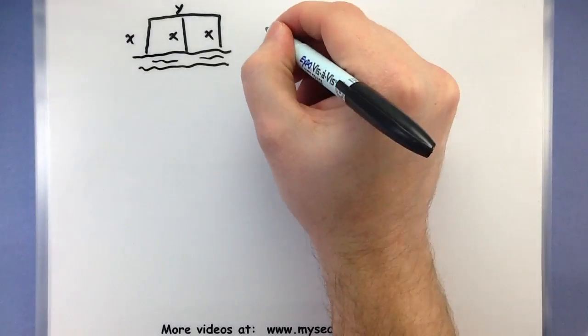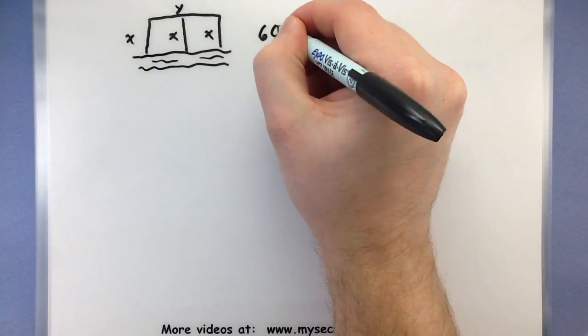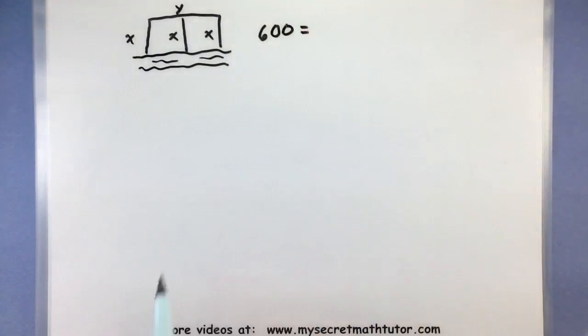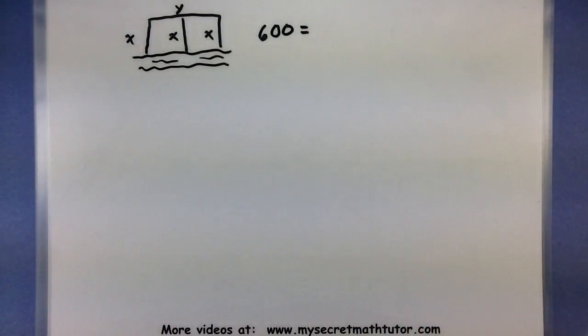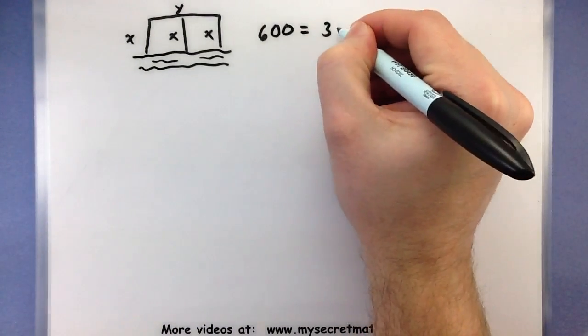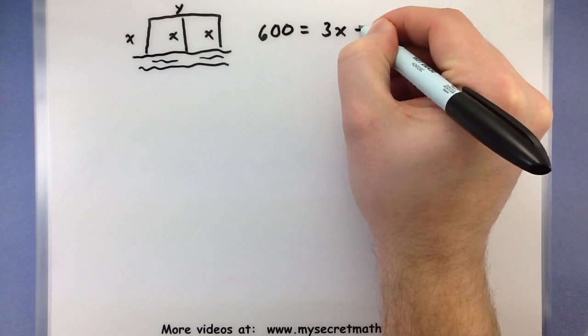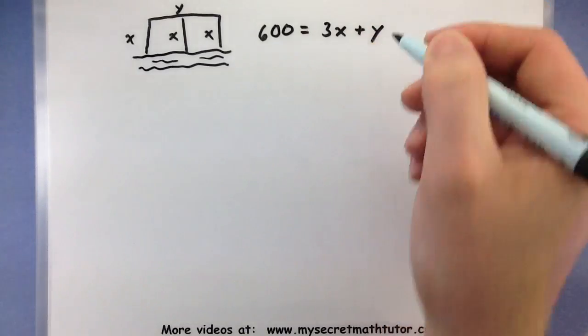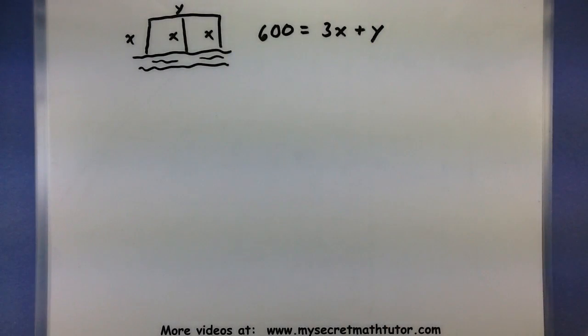Well the only thing we know right now is that the amount of fencing, 600, must equal all of these pieces put together. So I have three of my short pieces, or 3x, plus one long piece, y. Now by itself that does not look quadratic.